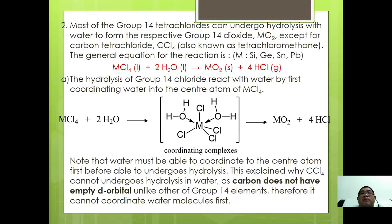All Group 14 tetrachlorides undergo hydrolysis with water except for CCl4. The general equation is MCl4 plus 2H2O gives MO2 plus 4HCl, where M may be silicon, germanium, tin, or lead. The hydrolysis occurs by first coordinating water molecule into the center atom of MCl4. Carbon does not have empty d orbitals to accommodate the additive bond of water, which is why carbon cannot undergo hydrolysis while the other Group 14 can.